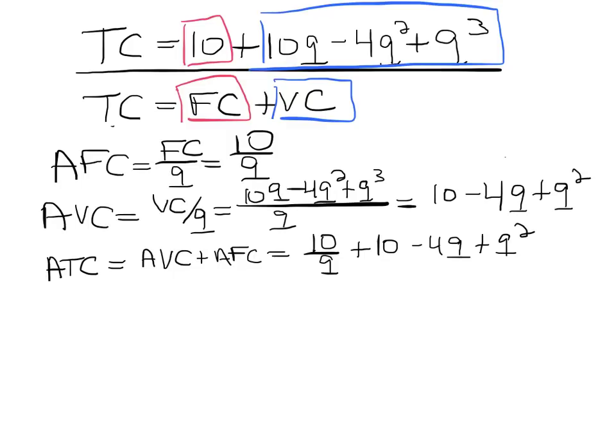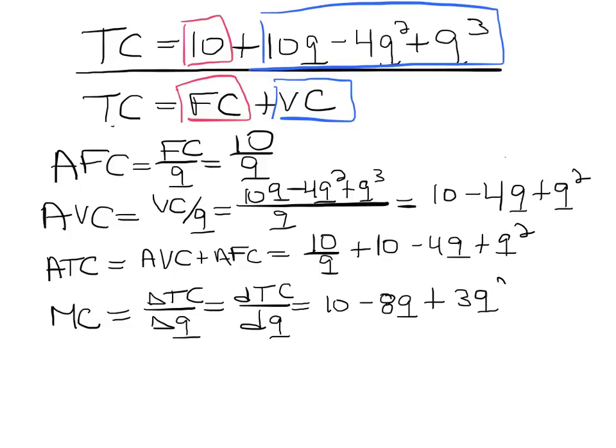And then the last important cost is the marginal cost, which is how the costs change every time you increase your output by one unit. And every time you see a slope, it's usually a derivative, so the marginal cost is really the derivative of the total cost equation with respect to output. So in this case, it would be equal to 10 minus 8q plus 3q square.